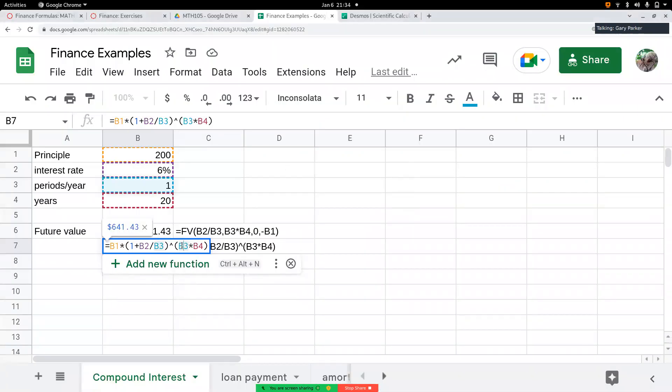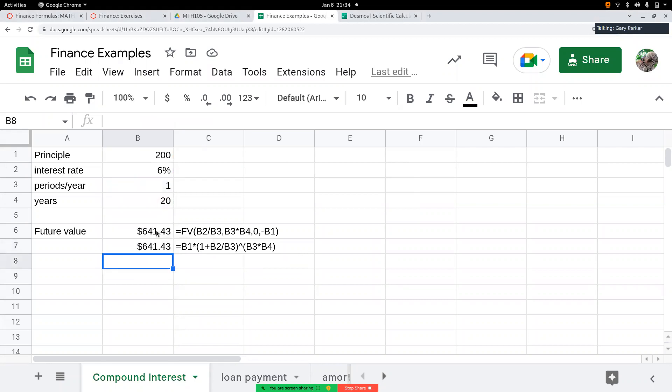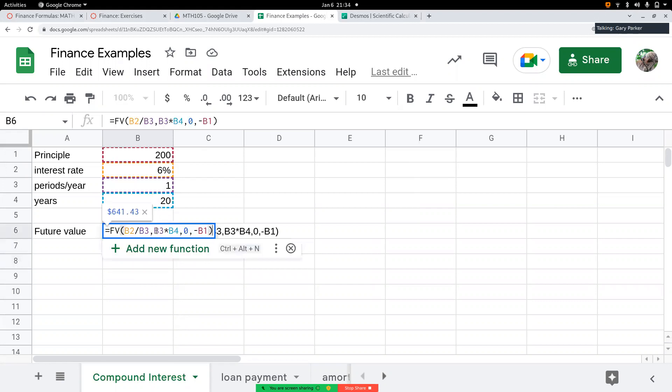And we want to do that for the number of years, which is 20 here. Now, alternatively, we can use the future value formula. Future value formula requires the rate, which is the periodic rate, not the annual rate. So we have to take the annual rate and divide by the number of periods.